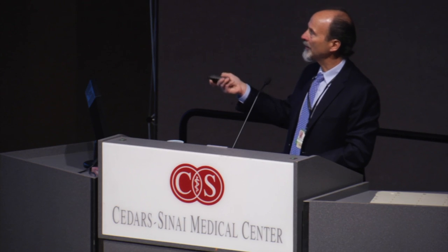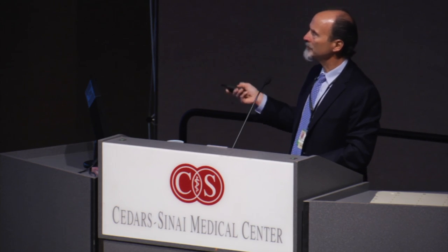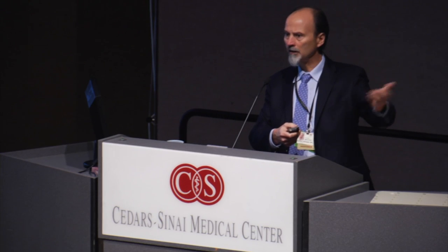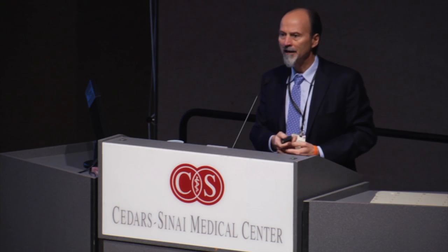If you need additional testing years from now, we can pull those blocks out, create a second or third set of recuts, and send them off wherever needed. To do this at Cedars, fill out the authorization form — just check off to get a copy of the pathology report and request a set of recuts. It'll take a few days and we'll get that for you, sending it where it needs to go or giving it to you directly to carry to the next institution.